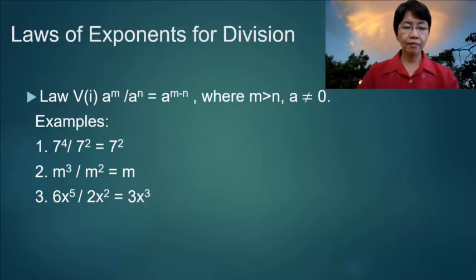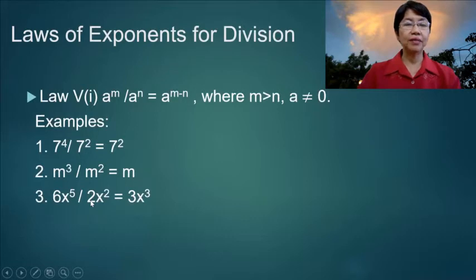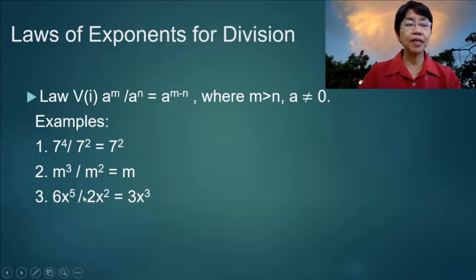And then number 3: we have 6x to the fifth divided by 2x squared. So we first divide the numerical coefficients: 6 divided by 2 equals 3. And then x to the fifth divided by x squared is equal to x cubed.